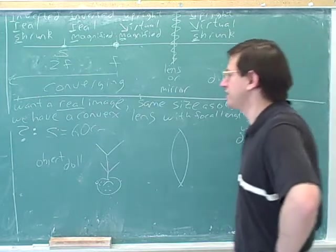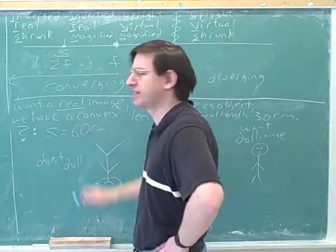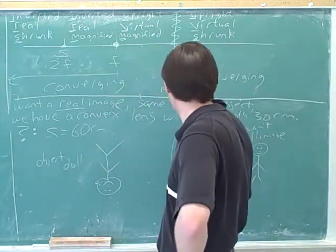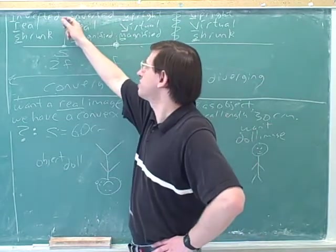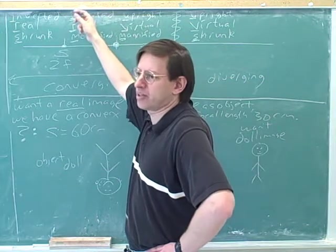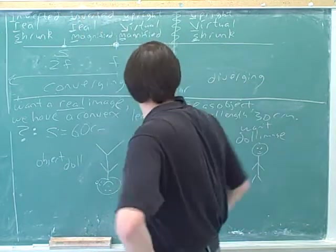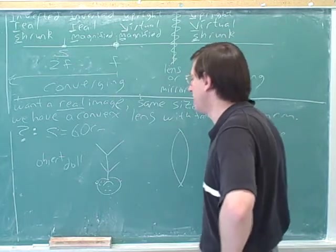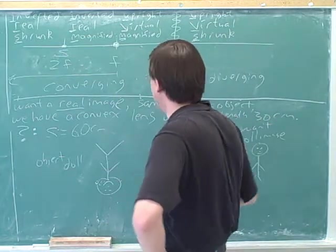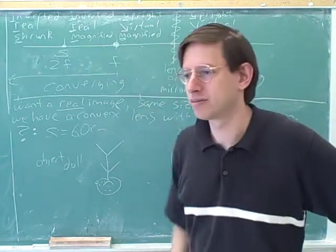I think one of the tricky things here is that the wording starts to get confusing, because we're using the word inverted in two different ways. The inverted here just means that whichever way the object looks, the image looks different from it. Which means here, if we want this to be right side up, we want this to be upside down. OK, yeah.